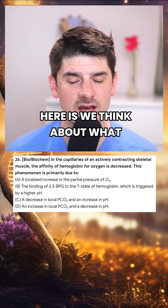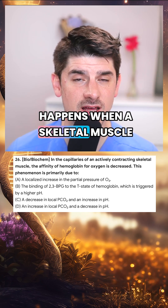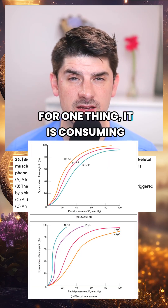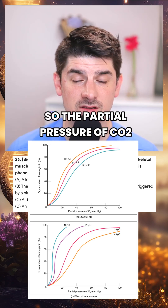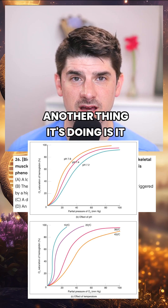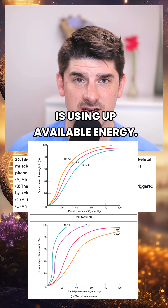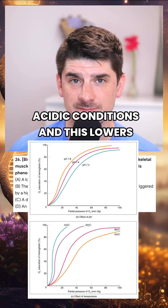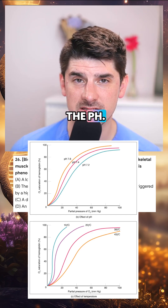Now the way we get to an answer here is we think about what happens when a skeletal muscle contracts. For one thing, it is consuming oxygen and disposing of CO2, so the partial pressure of CO2 goes up. Another thing it's doing is it is using up available energy, and of course this results in acidic conditions and lowers the pH.